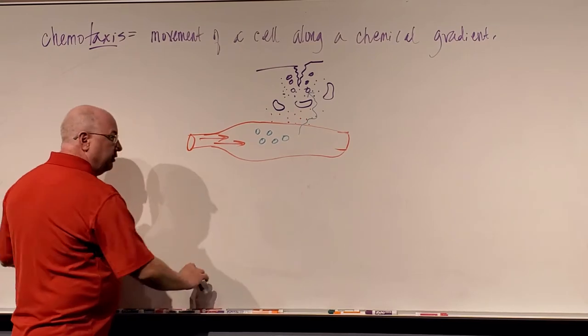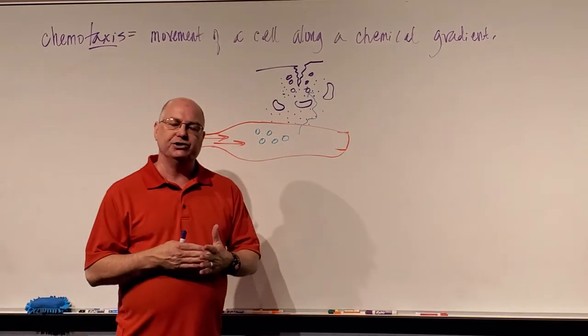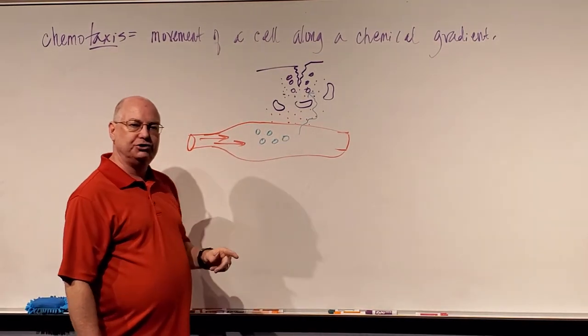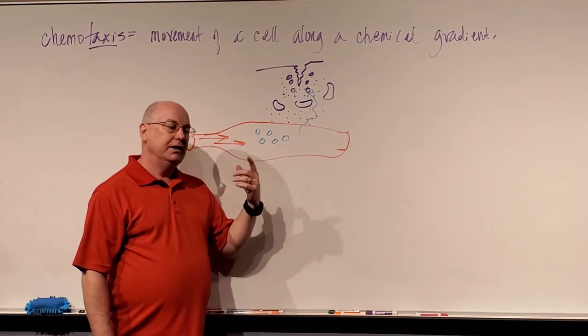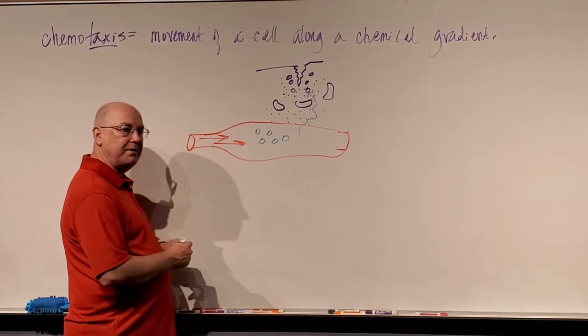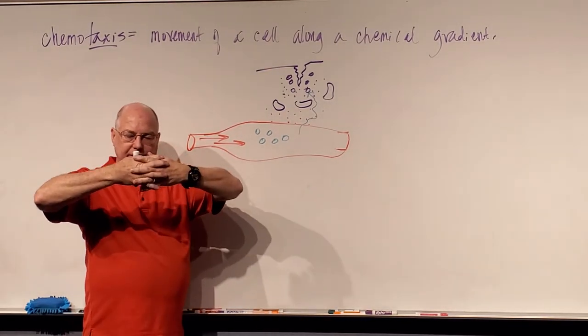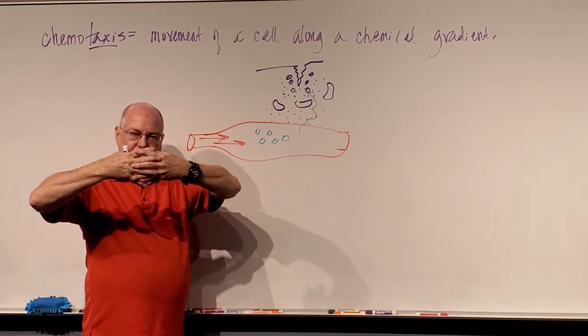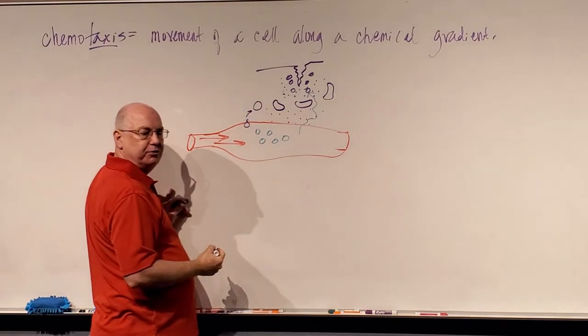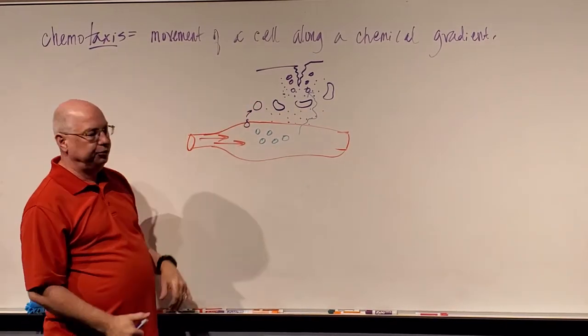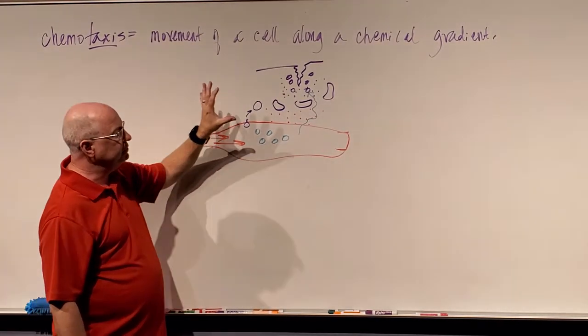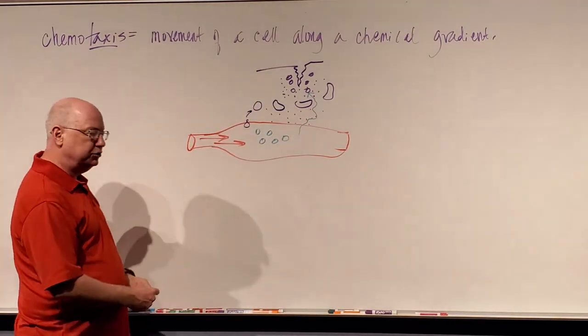Diapedesis is the movement of a white blood cell out of the bloodstream into the peripheral tissues. As the blood vessel dilates, the cells making up the capillaries get strained and white blood cells can squeeze through little gaps and pop out into the peripheral tissues. Our white blood cells use chemotaxis and diapedesis to move out into the periphery to attack the foreign agent.